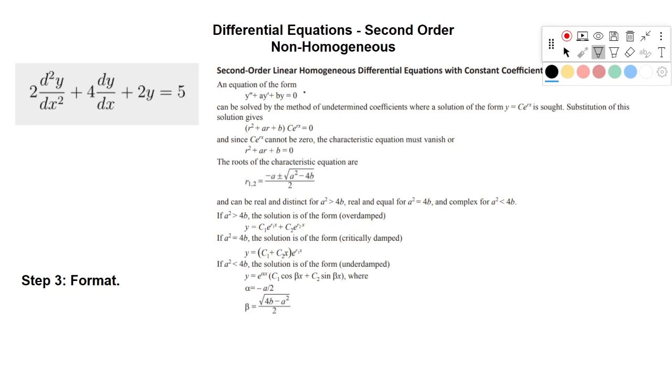So first thing we want to do is format our equation the way the handbook recommends. So the first thing to notice is that there is no variable in front of our highest-order derivative, so we have to get rid of this 2 in our equation. We can do that by dividing everything by 2.